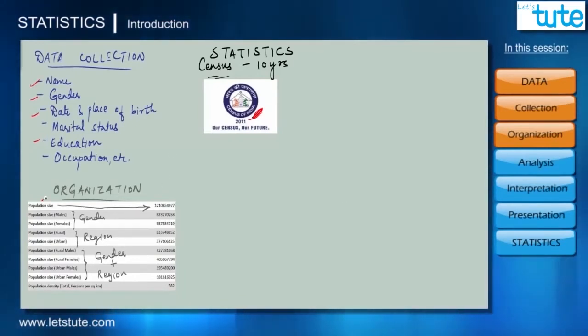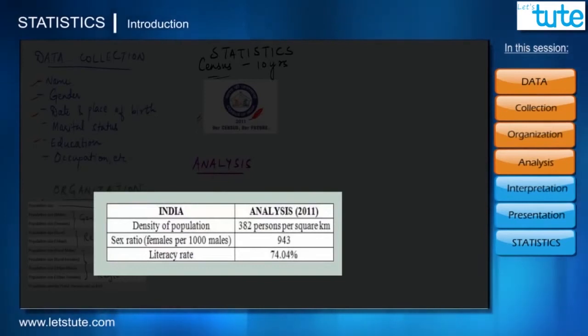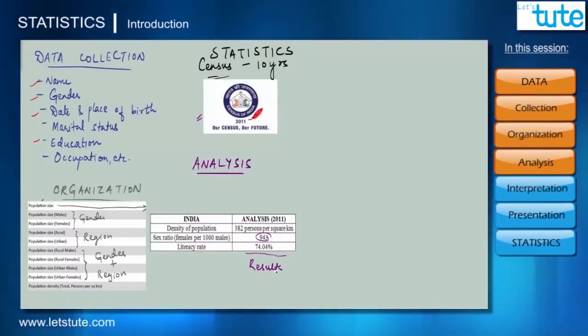A systematic organization always leads to an appropriate analysis of data. From the recent census of 2011, it was found that the density of population in India is 382 persons per square kilometer, and the sex ratio which is females per thousand males is 943. These kind of reports or analysis are the results that we get from this kind of data.